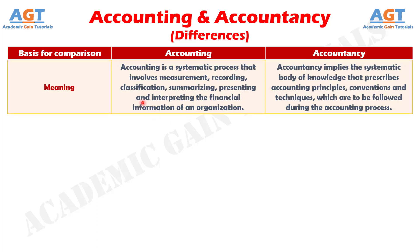Difference number 1: Accounting is a process used to maintain a record of financial transactions while complying with all the standards, principles, and concepts. On the other hand, accountancy is the systematic body of knowledge that specifies various accounting principles, standards, and conventions that are used to record the accounting information of the enterprise.